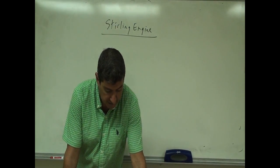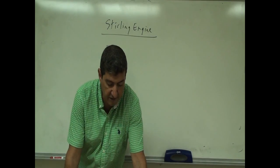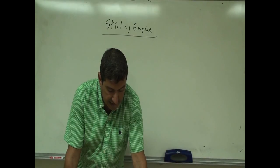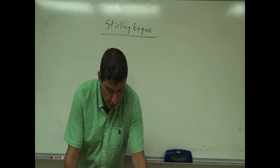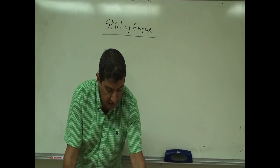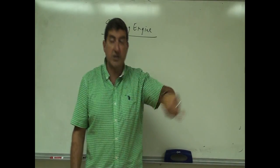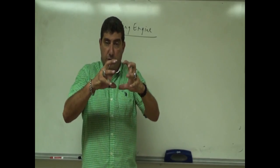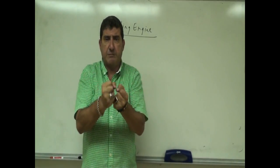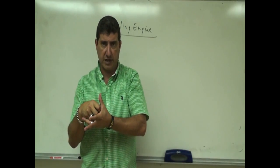More specifically, the Stirling Engine is a closed-cycle regenerative heat engine with a permanently gaseous working fluid. Closed-cycle, in this context, means a thermodynamic system in which the working fluid is permanently contained within the system. So that means the fluid — in this case the gas — is maintained in the system. You don't release the gases and let new gas come in.